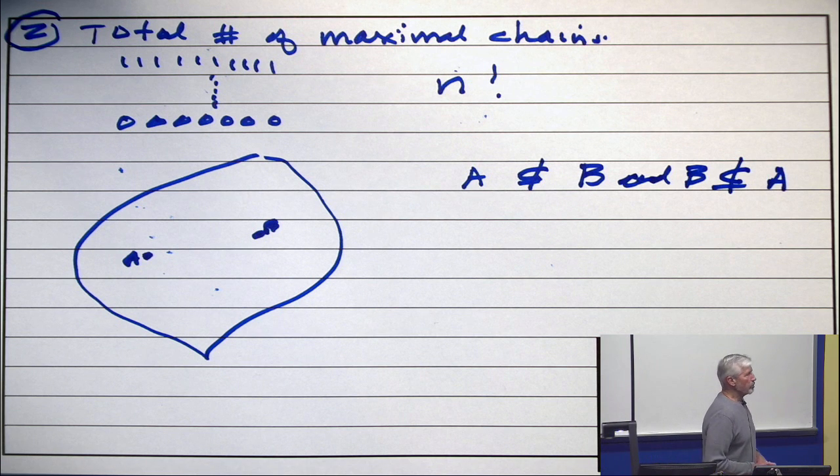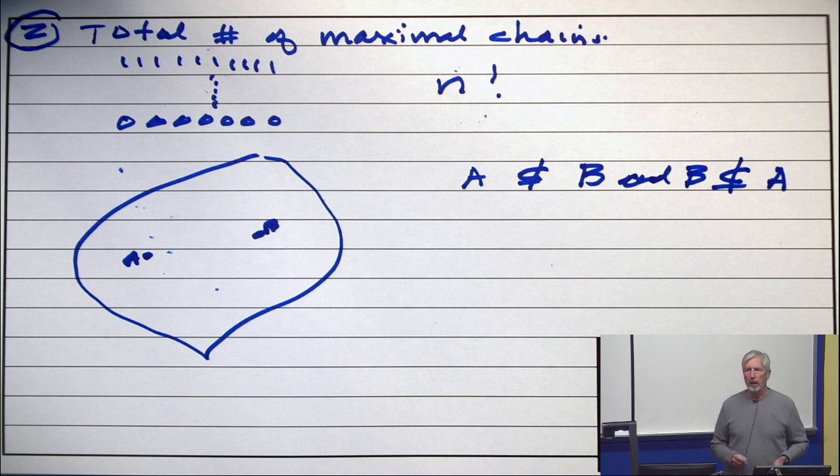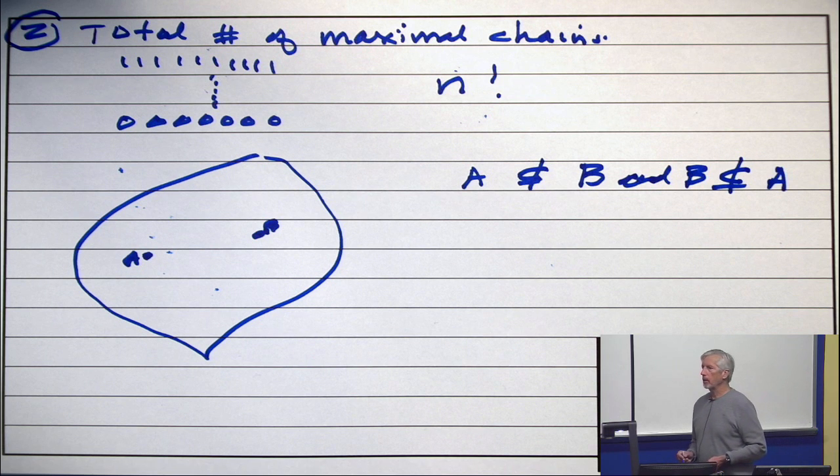Can a maximal chain go through both of them? Can a maximal chain go through two incomparable sets? No.